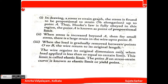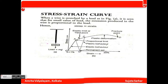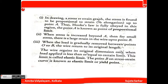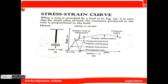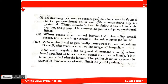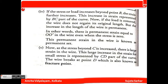When the load is gradually removed between points O and B, the wire returns to its original length — the wire regains its original dimensions only when the load applied is less than or equal to a certain limit. This limit is called the elastic limit, and point B on the stress-strain curve is called the elastic limit point.